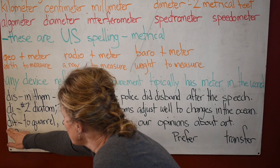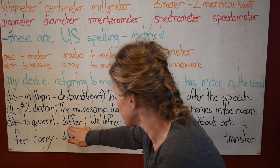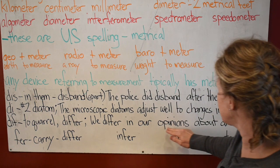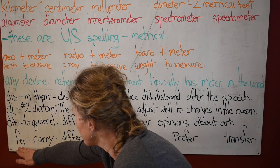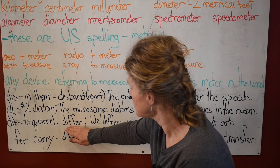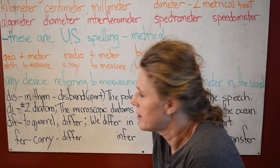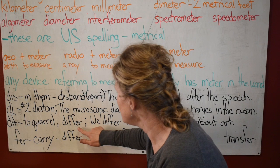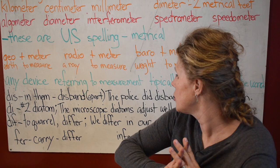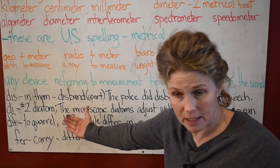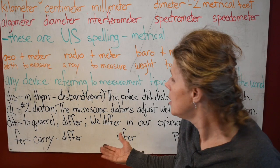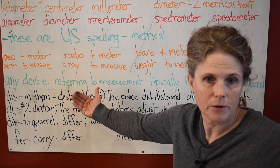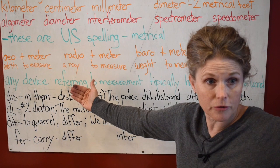Now 'diff' — to quarrel. What does 'differ' say? 'We differ in our opinions about art.' 'Fer' means to carry. So if you look at 'differ,' 'diff' means 'apart' in this word. I beg to differ — we're apart. If you know what 'fer' means — to carry — and 'diff' means 'apart,' you're carrying apart from each other, you're coming apart, not together. That's differing: you're apart, not coming together on this.